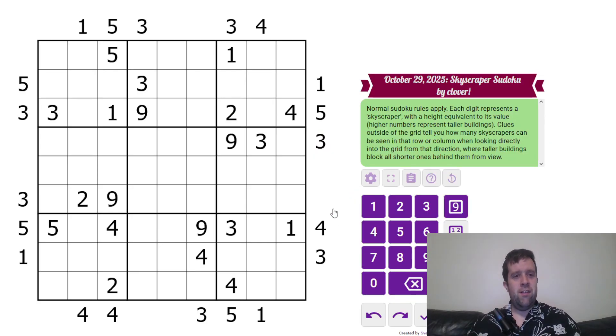Now, I did say that this was genuinely approachable Sudoku and then this is a skyscraper. But let's see what we can do about that. So, normal Sudoku rules apply. Each box, each row and each column must contain the digits once and once each. Now, each digit represents a skyscraper with height equivalent to its value. Higher numbers represent taller buildings. Clues outside the grid tell you how many skyscrapers can be seen in that row or column when looking directly into the grid from that direction where taller buildings block all the shorter ones behind them from view.